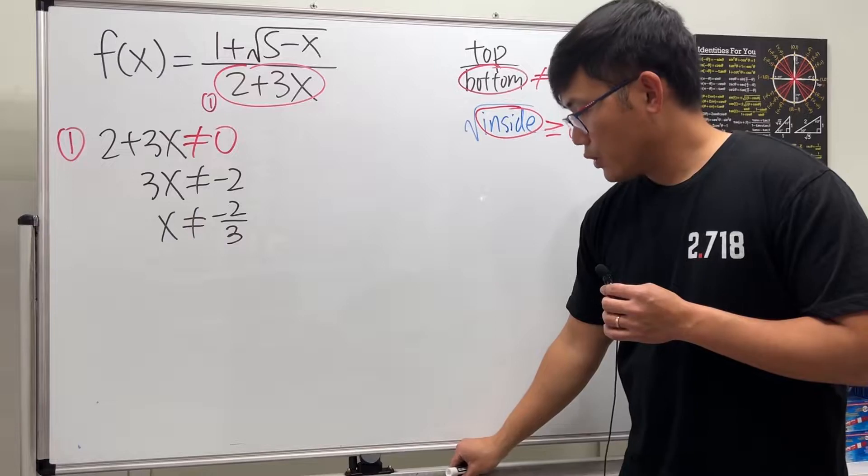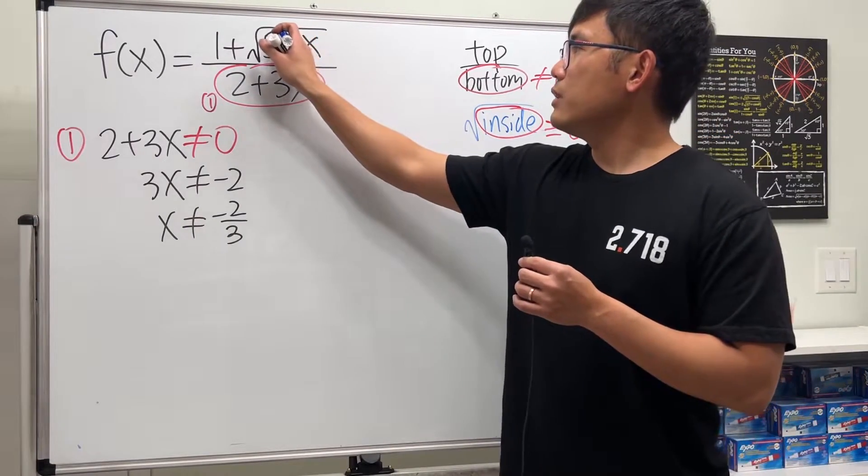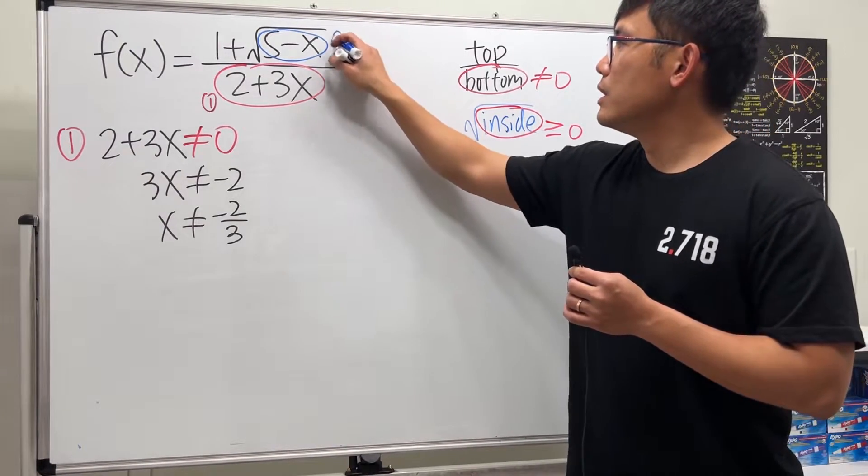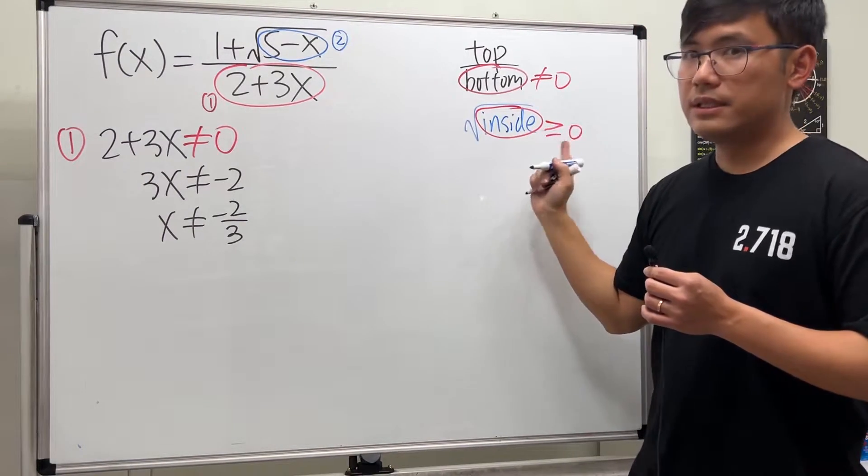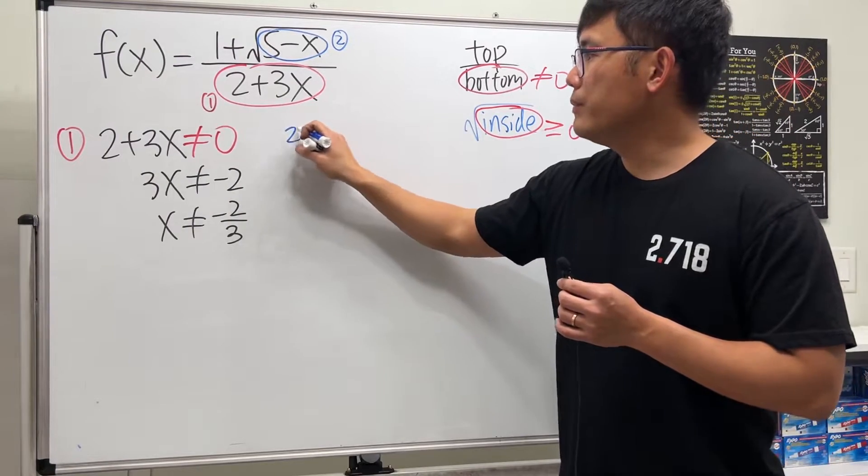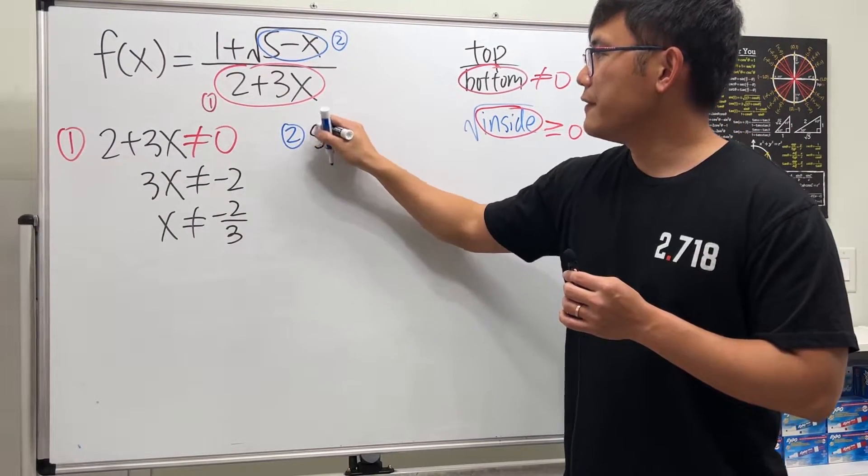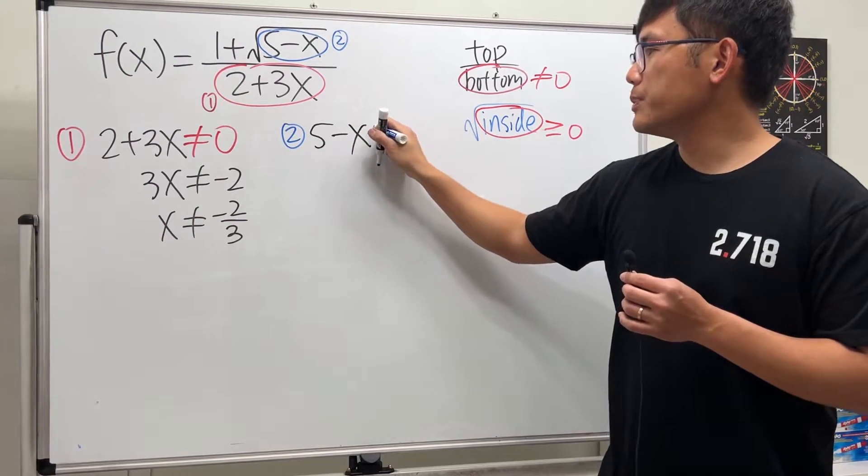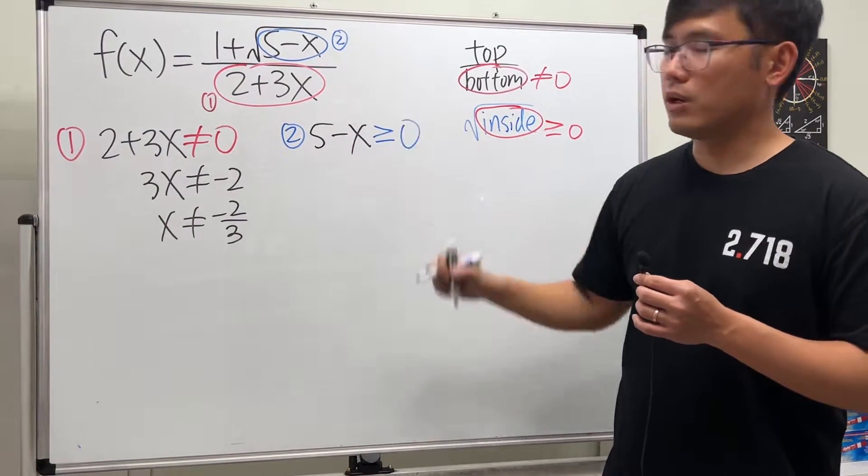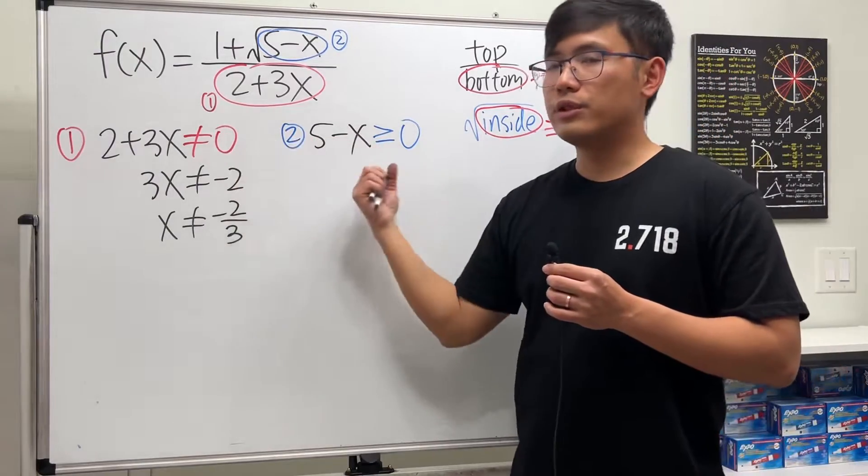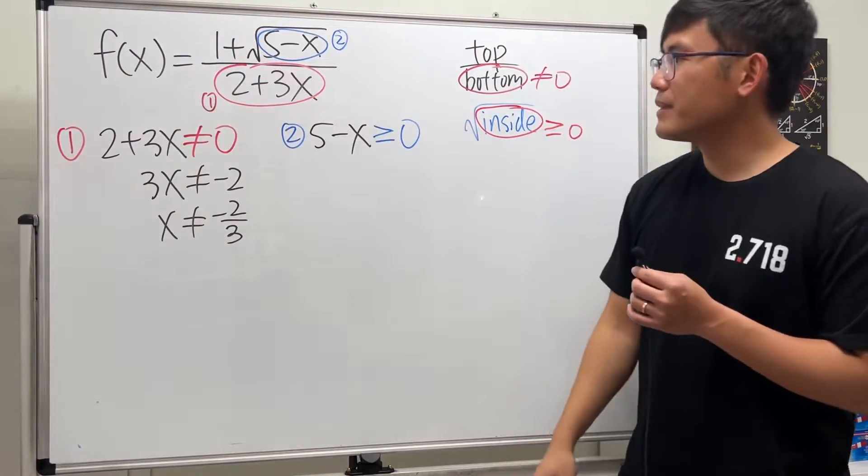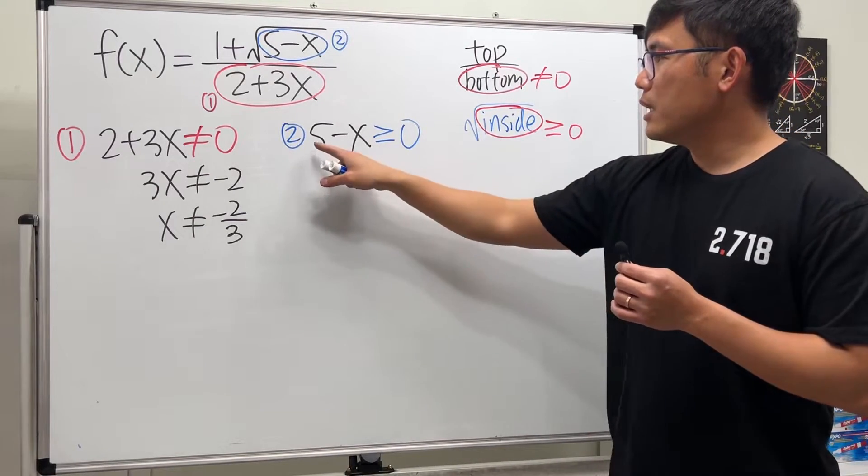For the other part, the square root part, we see that here we have 5 minus x. Per the discussion for number two, we have to make sure that 5 minus x, the inside of the square root, has to be greater than or equal to zero. These are the two conditions that we need.